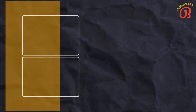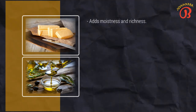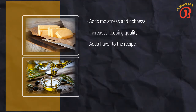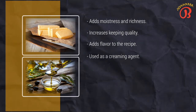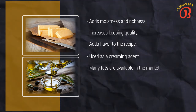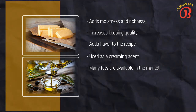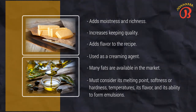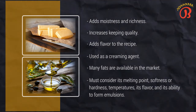The next ingredient is fat. The major functions of fats in baked items are to add moistness and richness, to increase keeping quality, to add flavor, and to assist in leavening when used as a creaming agent or to give flakiness to puff pastry, pie dough, and similar products. Many fats are available to the baker, each with distinctive properties that make it suitable for different purposes. Among the properties a baker must consider when selecting a fat are its melting point, its softness or hardness at different temperatures, its flavor, and its ability to form emulsions.